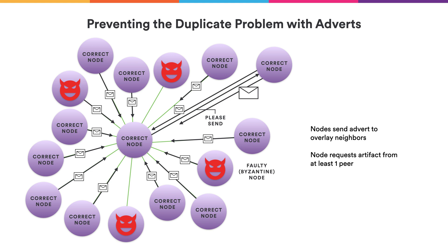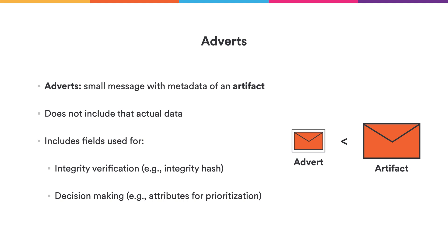Each node requests an artifact from at least one peer. We start by asking one peer, but if we encounter a problem, we may ask another peer for the same artifact, repeating until we find a non-faulty honest peer. An advert is a small message with only some metadata of an artifact — it does not include the actual data. It includes fields used by the gossip protocol and its application components for integrity verification, such as an integrity hash, and for decision making, such as attributes that help components prioritize artifacts.